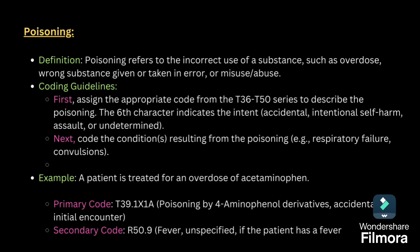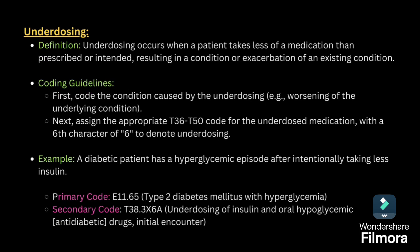Poisoning refers to the incorrect use of a substance such as overdose or the wrong substance being given or taken. For poisoning, first code for the poisoning and second code for the complication. Example: a patient treated for an overdose of acetaminophen — first, code poisoning by acetaminophen; second, code for the resulting condition.